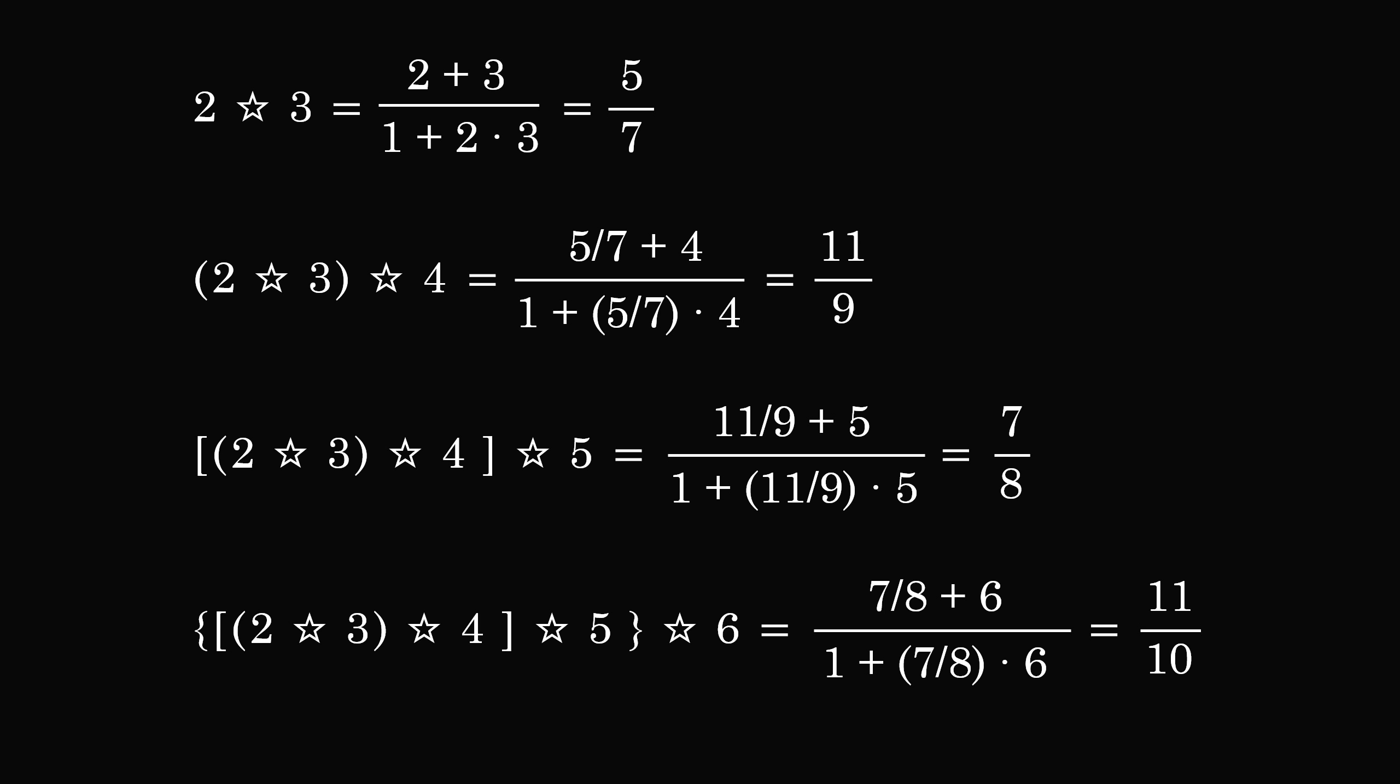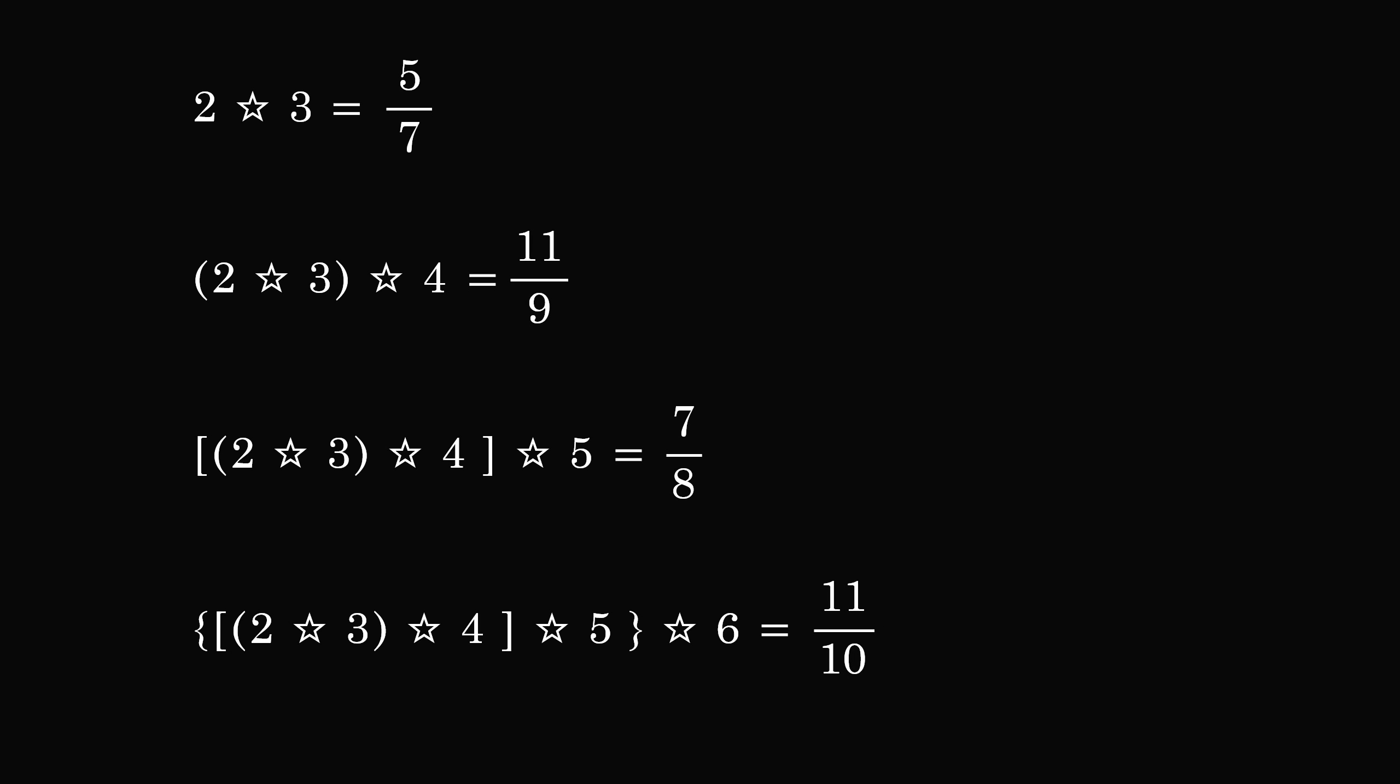We now search for a pattern in these results. Notice in the first two fractions the denominator and the numerator differ by 2. So let's rewrite the last two results. 7 over 8 is equal to 14 over 16 and 11 over 10 is equal to 22 over 20.